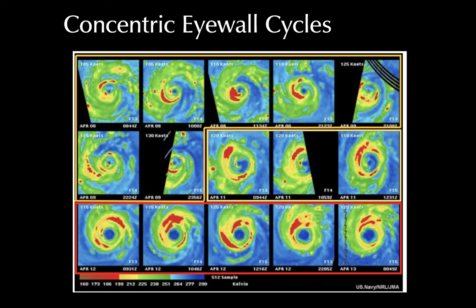Three examples of eyewall replacement cycles are shown here for the same typhoon over a five-day period in SSMI passive microwave data at 85 GHz. Each cycle is outlined by a different colored box: the orange box for the first cycle, the yellow box for the next set of images, and a third eyewall replacement cycle surrounded by the red box. These show several examples of secondary eyewalls becoming the primary eyewall, contracting inward, then a new secondary eyewall developing and repeating the process several times.